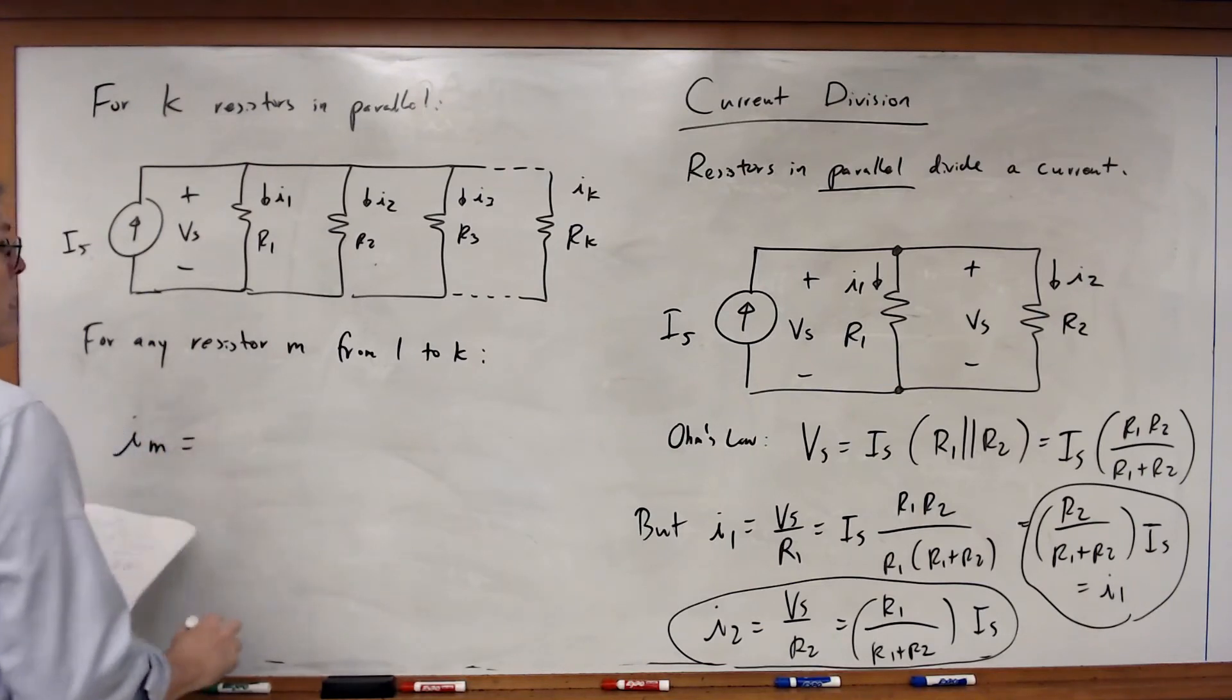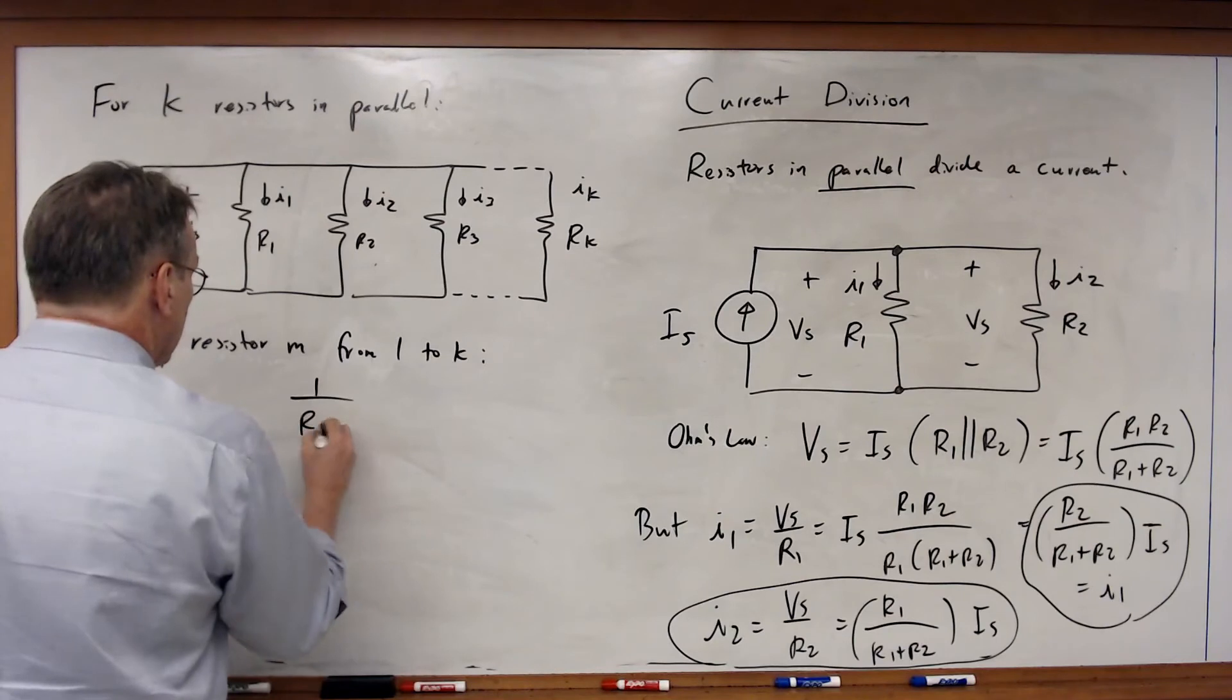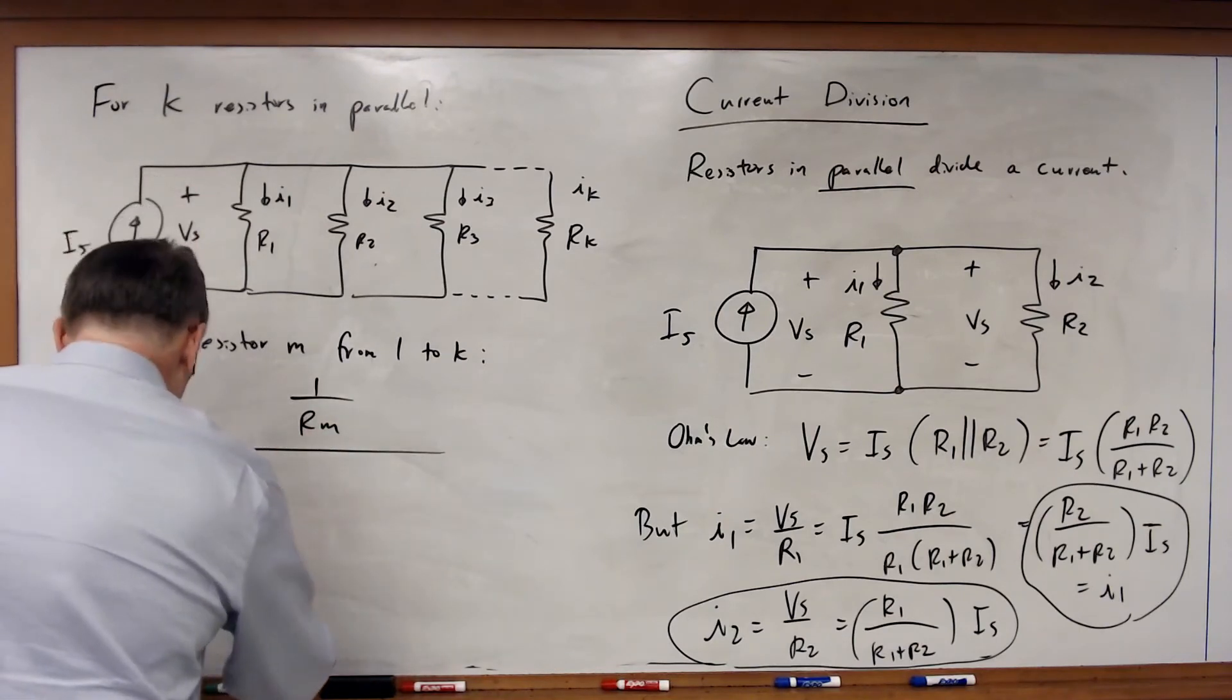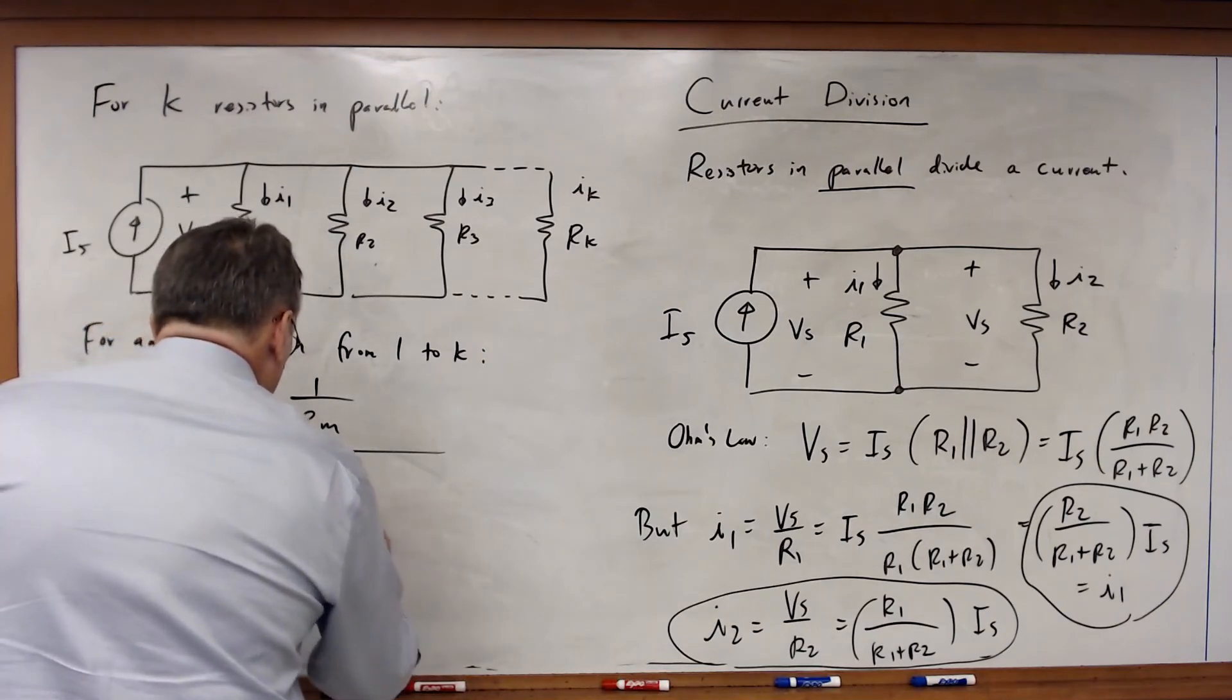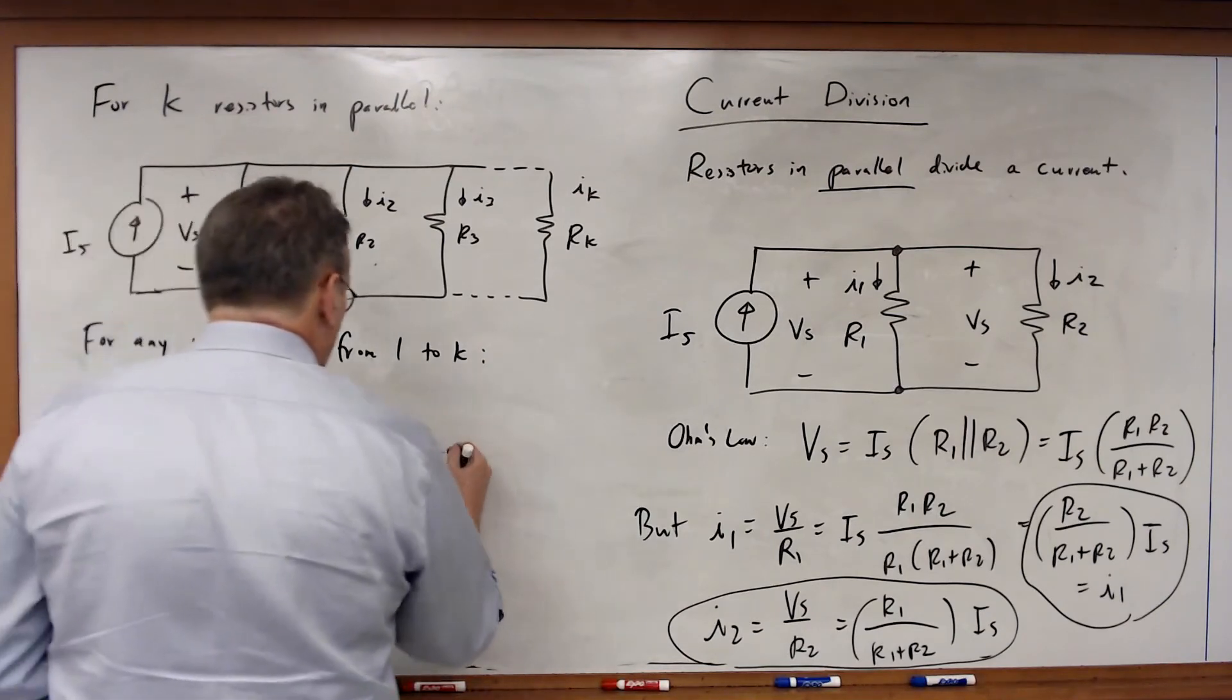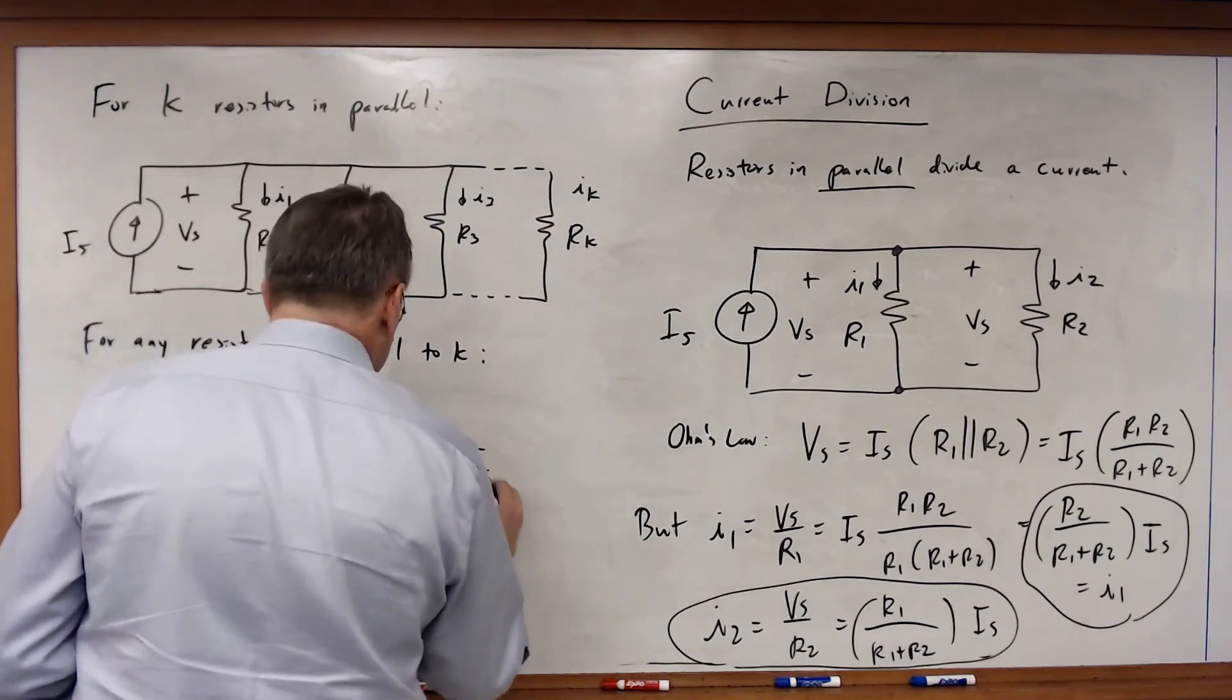That I sub M will be equal to 1 over R sub M divided by the sum of J equal 1 to K of 1 over R sub J, all multiplied times I sub S.